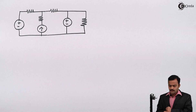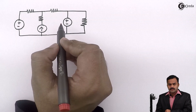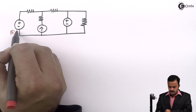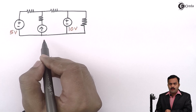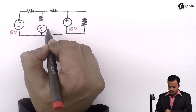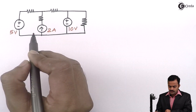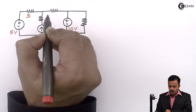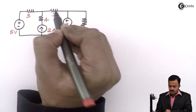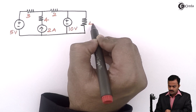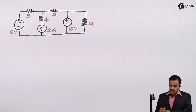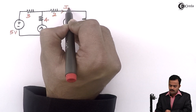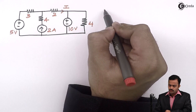In this problem, two voltage sources are there of value 5 volt and 10 volt. And a current source is present of 2 ampere with resistances of 3 ohm, 4 ohm, 2 ohm, and 4 ohm. We are supposed to find out this current using superposition theorem.